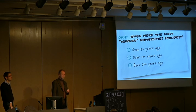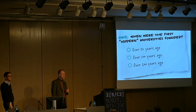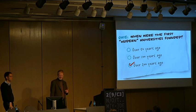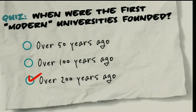50 years? 100 years? 200 years? Actually 200 years. The Humboldt University in Berlin — Berlin University at that time — was the first of that style. So we're dealing with a pretty old model of university.